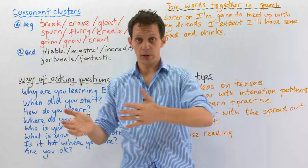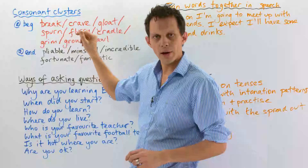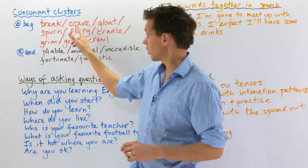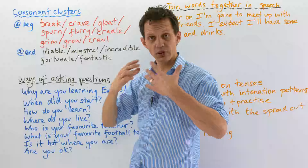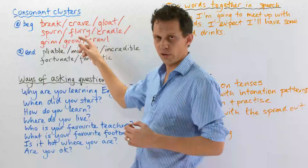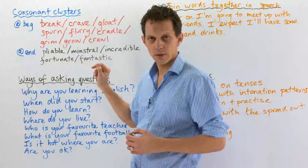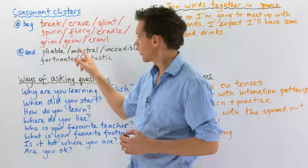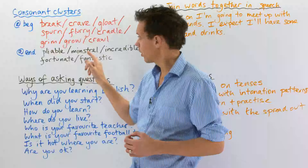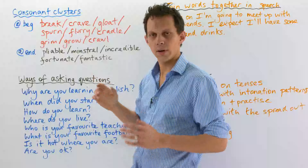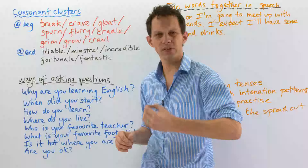Repeat after me. Break — the B goes with the R. Crave. Gloat. Spurn. It doesn't matter if you don't know the meanings of these words; I'm just getting you used to saying them. Flurry. Cradle. Grim. Grow. Make sure you are saying these at home just to practice and get used to English sounds.